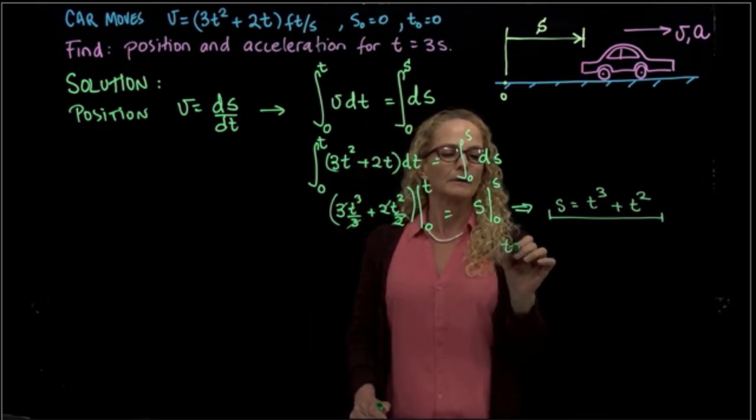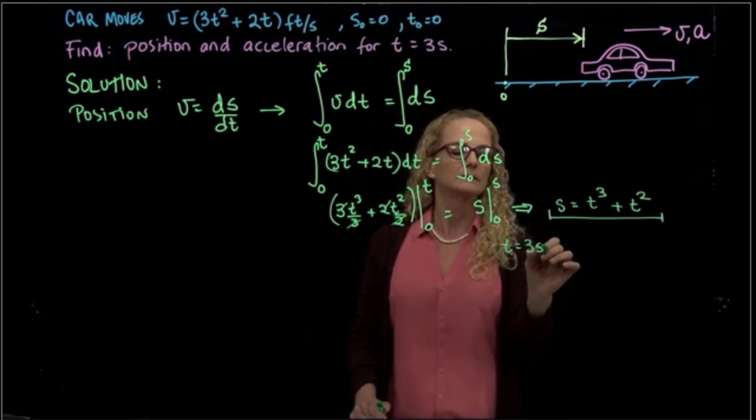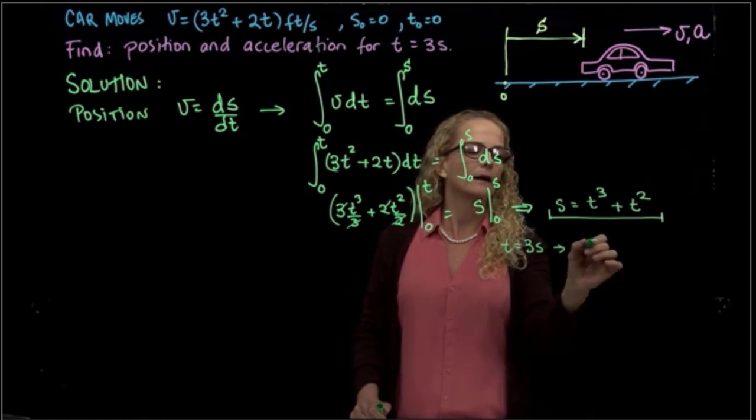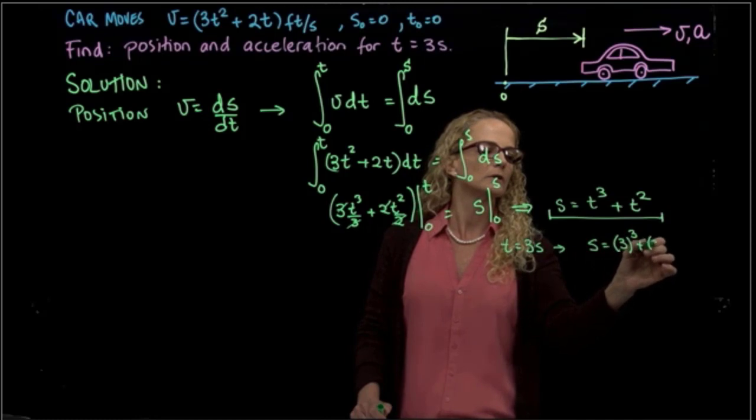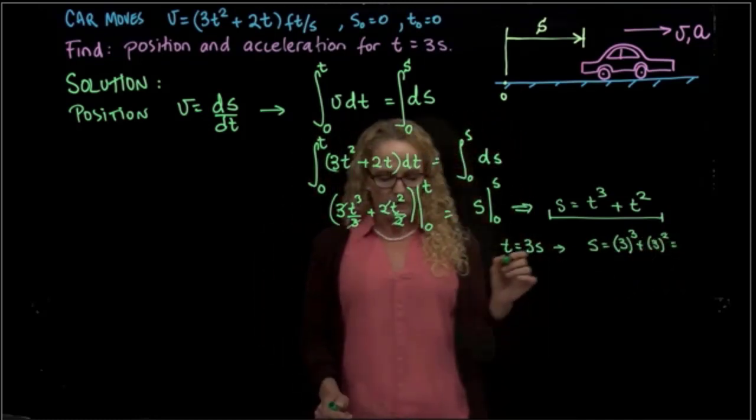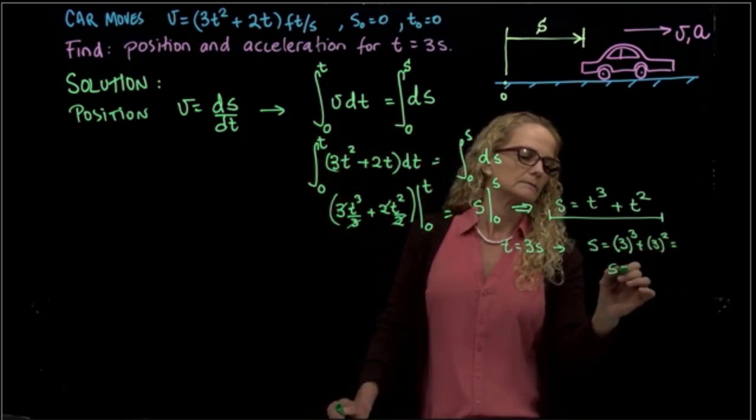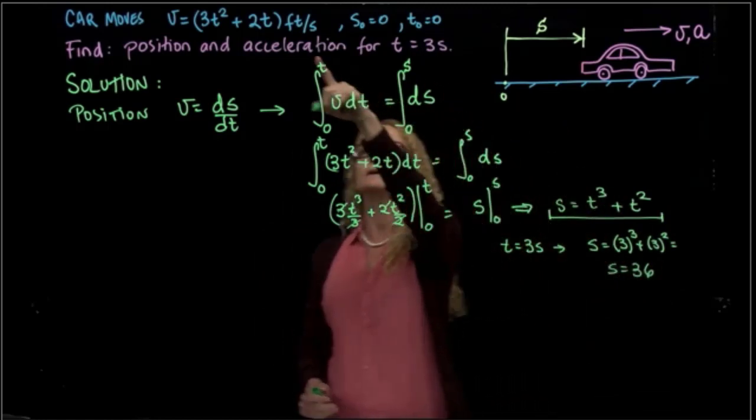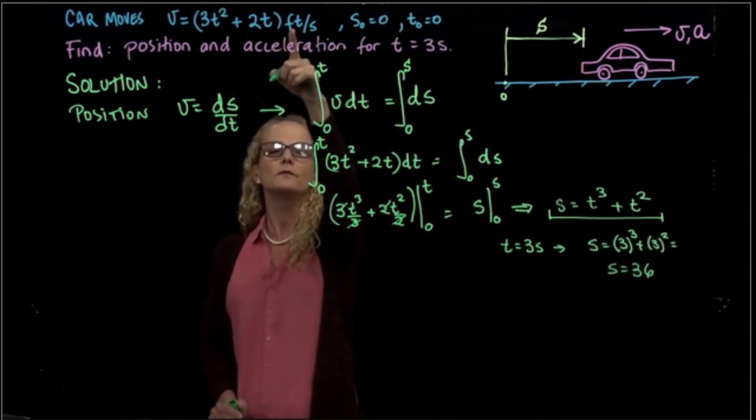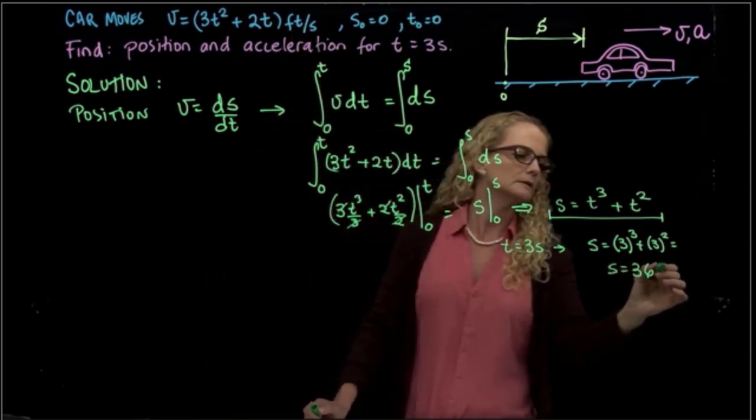For time equals 3 seconds, I evaluate that and I get s equals 3 cubed plus 3 squared, the value of 36. And the units are very important, since my initial units for the velocity were feet over second, this is in feet.